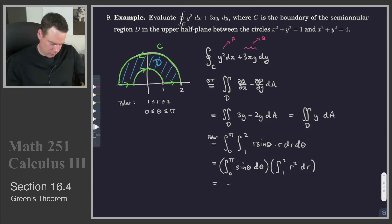Antiderivative of sine is negative cosine theta. That's from 0 to pi. And the other one is 1 third r cubed from 1 to 2.